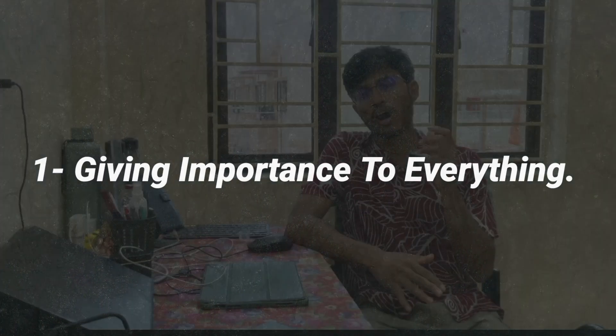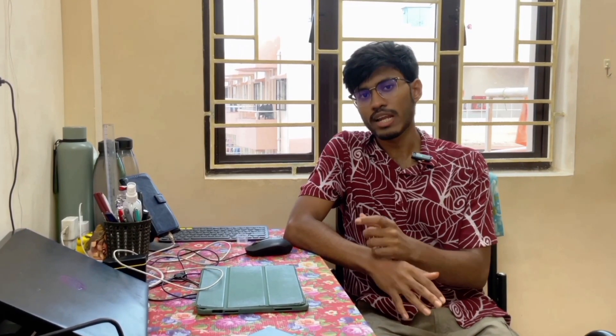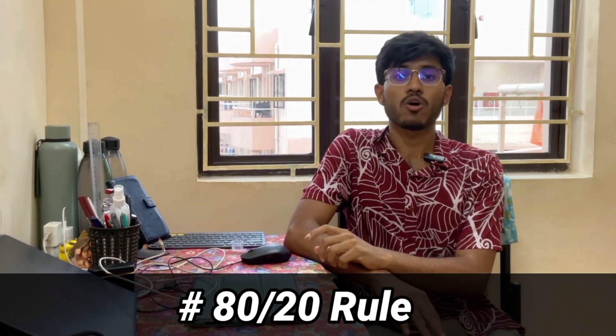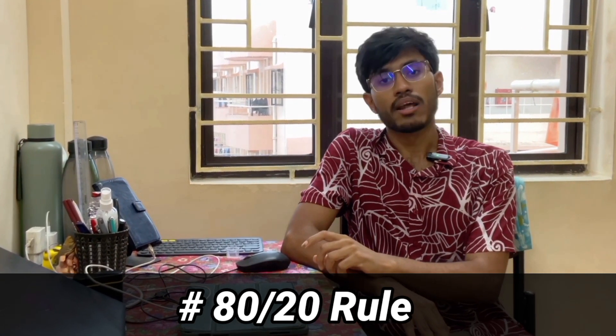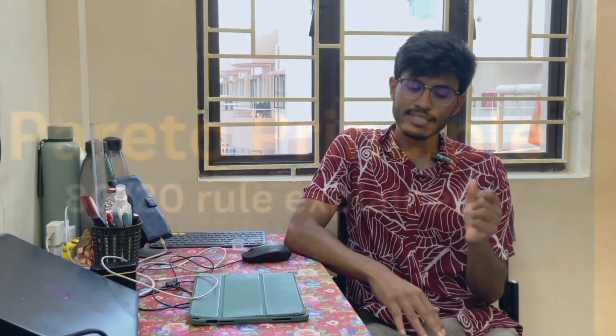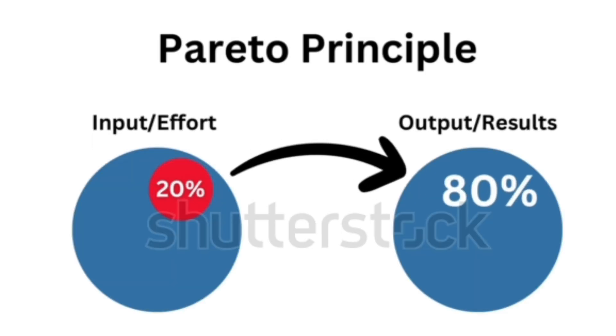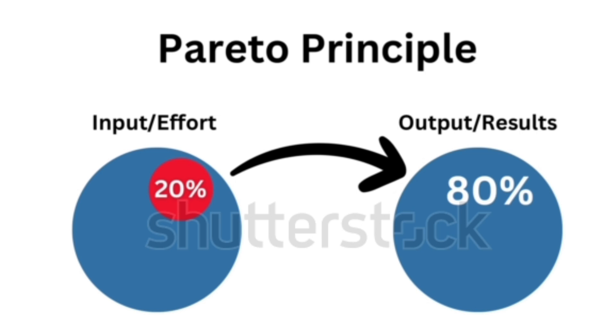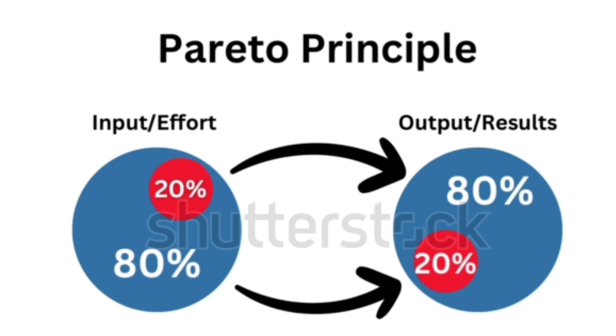Without any delay, let us start. The first one is giving importance to everything. Have you heard about the 80/20 rule, also famous as Pareto's principle? It says that 80 percent of things are actually not important, and 20 percent of things are important.